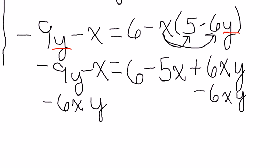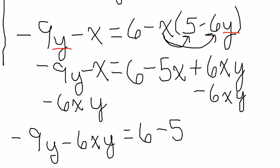And what I'll also need to do is I'll also need to add x. I'll do that in the next step. So, right now I've got negative 9y minus 6xy equals 6 minus 5x.